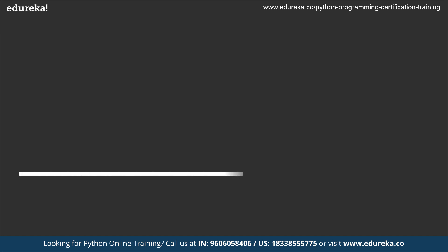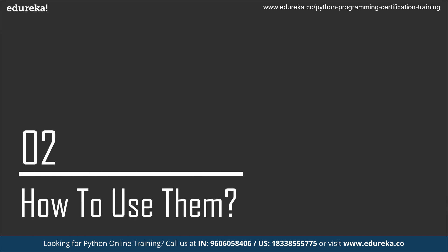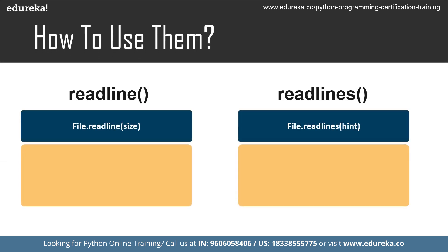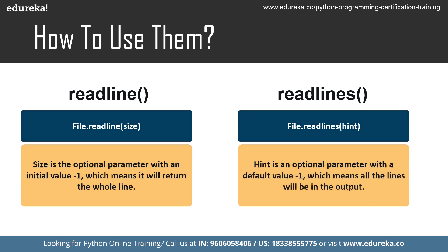Let us take a look at how we can use these methods inside a program. The Python readline method has a parameter called size, which is used to specify the number of bytes from a line to return. It is an optional parameter and the default value for the size parameter is minus one, which means it will return the whole line by default. When it comes to readlines, it has a hint parameter which is also optional, and the default value is minus one, which returns all the lines. The hint parameter takes a hint number, and if the number of bytes exceeds the hint number, no more lines will be returned.